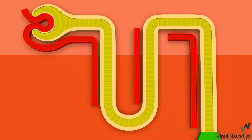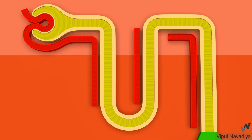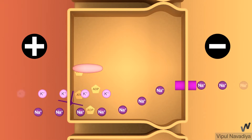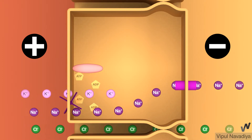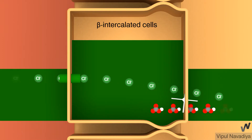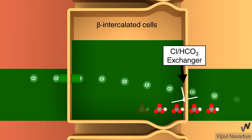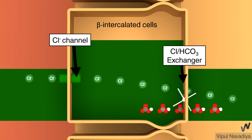Reabsorption in the collecting duct occurs by both paracellular and transcellular routes. Paracellular reabsorption is similar to the early proximal tubule: reabsorption of positively charged sodium creates electronegativity inside the lumen, so chloride moves from lumen into the interstitium by the paracellular route. Transcellular reabsorption is done by beta intercalated cells, with apical entry by the chloride-bicarbonate exchanger and basolateral exit by chloride channels.